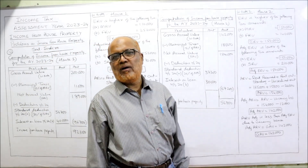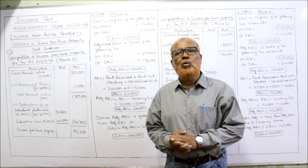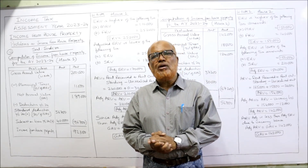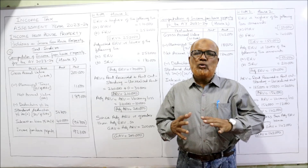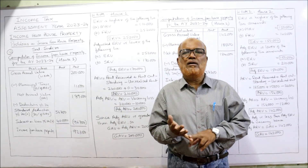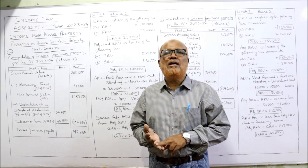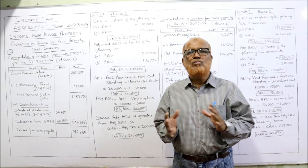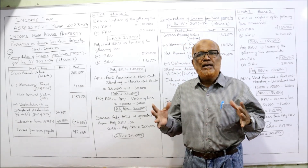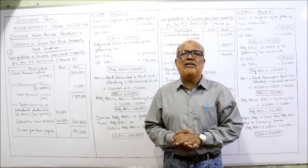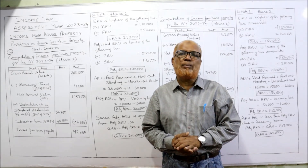That's the end of problem number 12 — 12 problems completed on computing income from house property. Remaining problems you can do as your own practice as time is short. In the next video, I will start another small topic: computing income from capital gain. Totally five heads of income are: salary, house property, business or profession, capital gain, and other sources. We will complete the small heads first, then income from salary later.